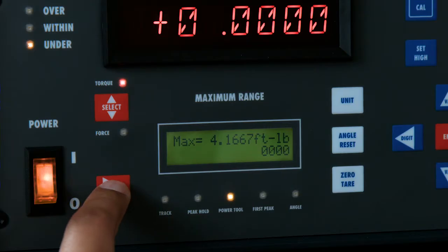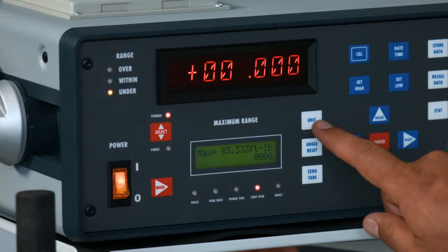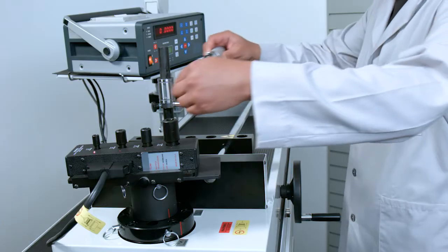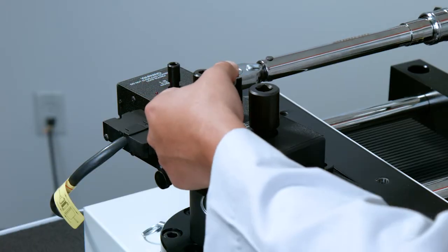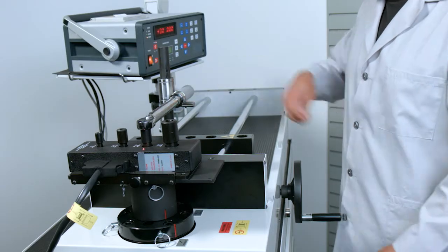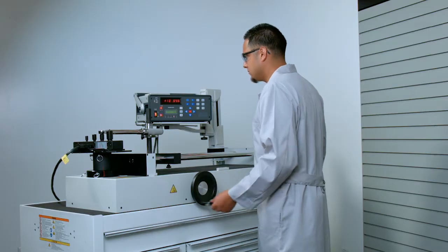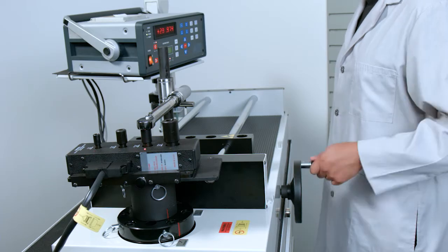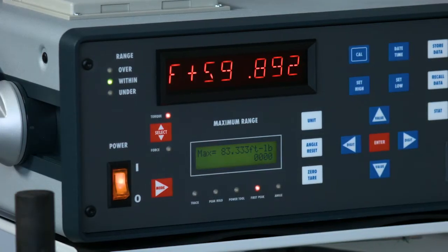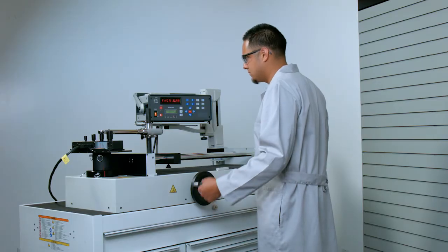To calibrate a torque wrench, first select the correct mode and units of torque on the monitor, select the correct torque transducer, and then mount the torque wrench. Turn the gear reduction handwheel to rotate the transducer, thus applying force to the torque wrench. The system detects the first peak of the wrench and stores the reading automatically.